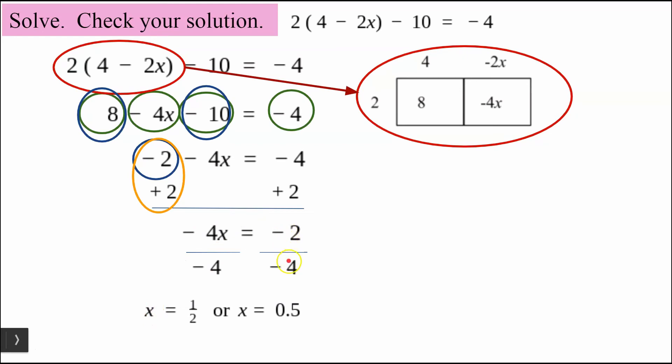Negative 2 divided by negative 4 is positive 1 half, or you may write it as a decimal, 0.5.